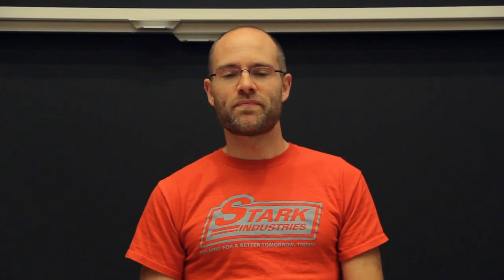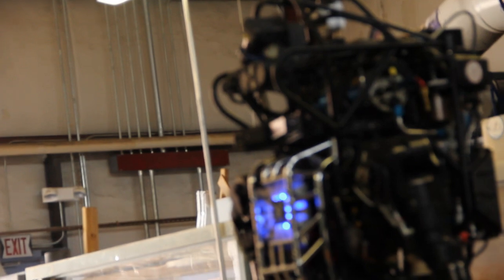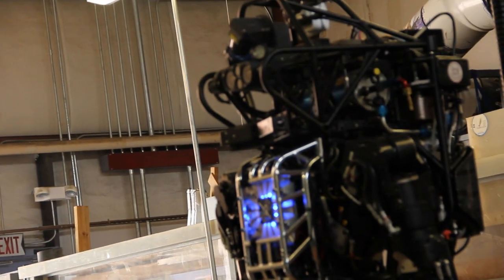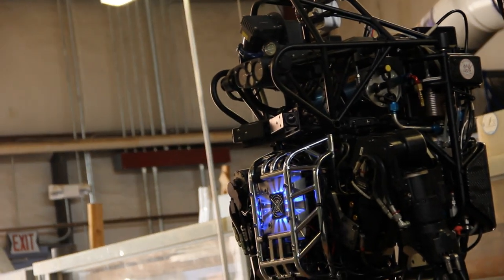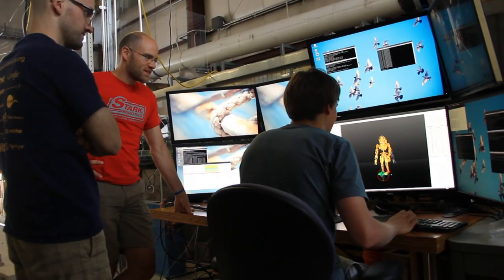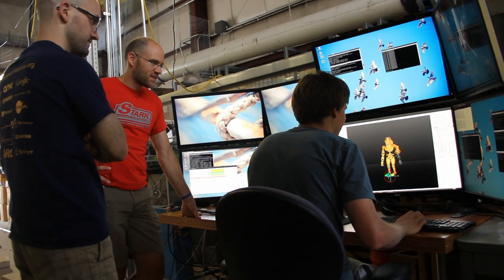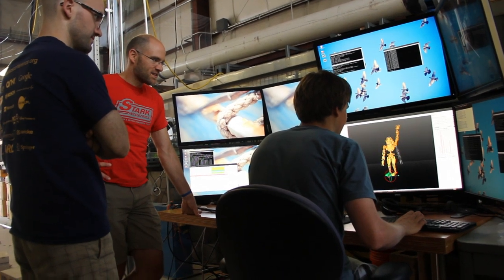Welcome to Underactuated Robotics. Underactuated Robotics is the science of building robots that reason about and exploit their dynamics to make them move more efficiently, more gracefully, more aggressively through the world.